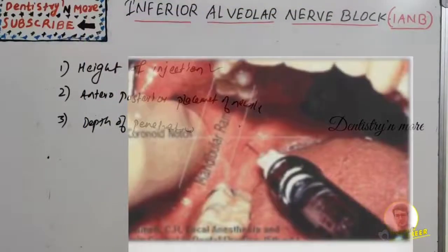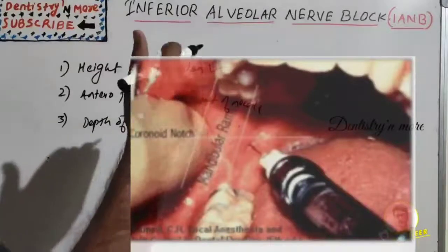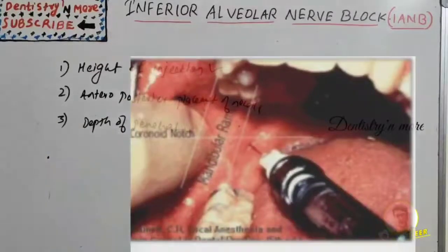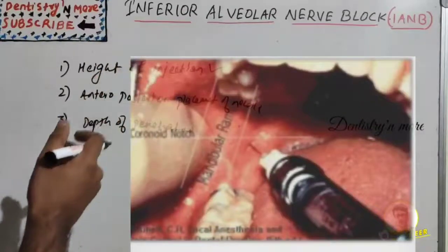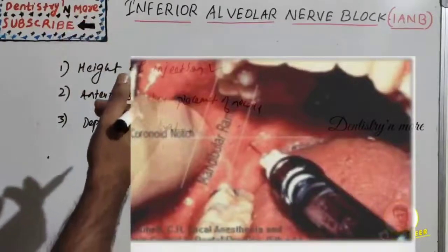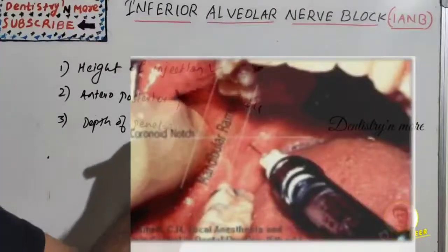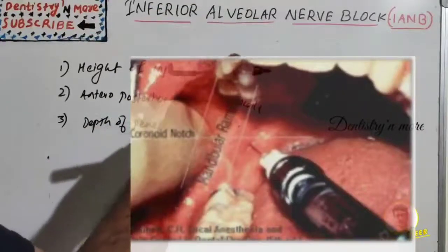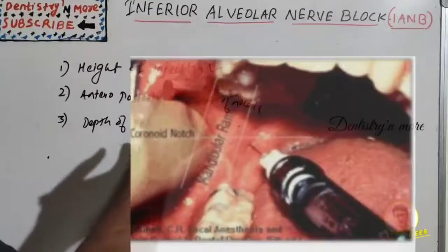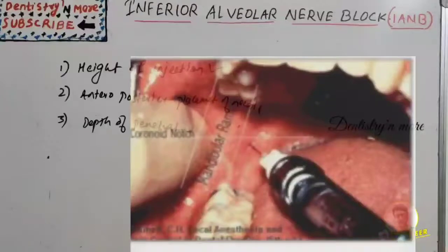The syringe barrel is placed at the corner of the mouth, usually corresponding to the premolars. The needle insertion point lies three-fourths of the anterior-posterior distance from the coronoid notch back to the deepest part of the pterygomandibular raphe.